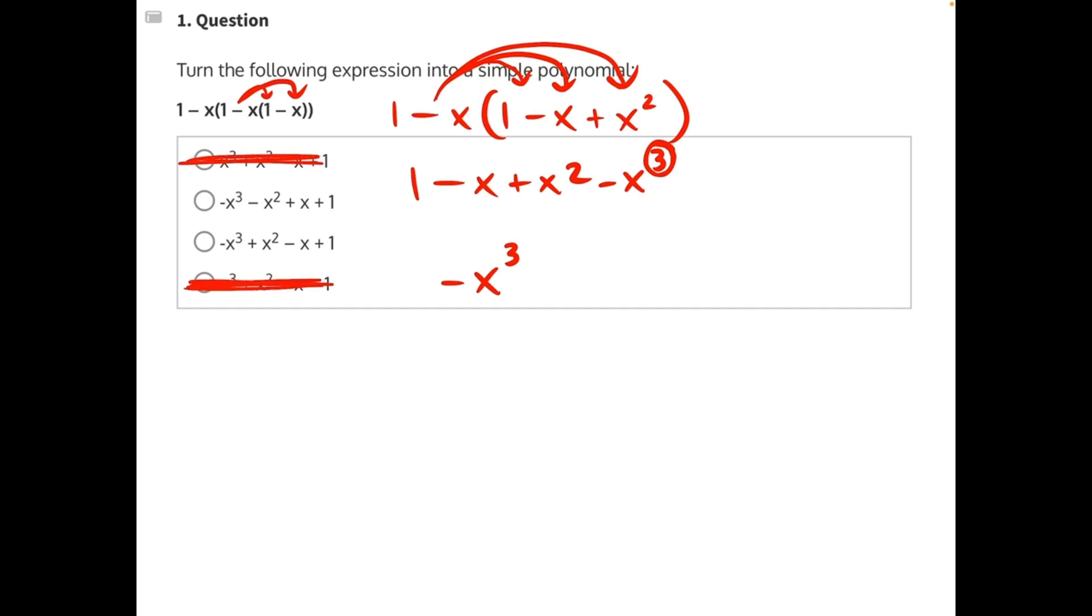Then we can continue. Our next highest power is 2. So we have this positive x to the 2. And that tells us everything we need to know to find our answer, which is answer choice C, because it has a negative x to the third and a positive x squared instead of a minus x squared.